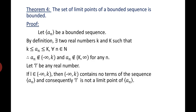By definition, there exist two real numbers k and K such that k ≤ A_N ≤ K for all N ∈ ℕ. Therefore, A_N does not belong to (-∞, k) and A_N does not belong to (K, ∞) for any N. Let L be any real number. If L belongs to (-∞, k), then (-∞, k) contains no terms of A_N and consequently L is not a limit point of A_N.